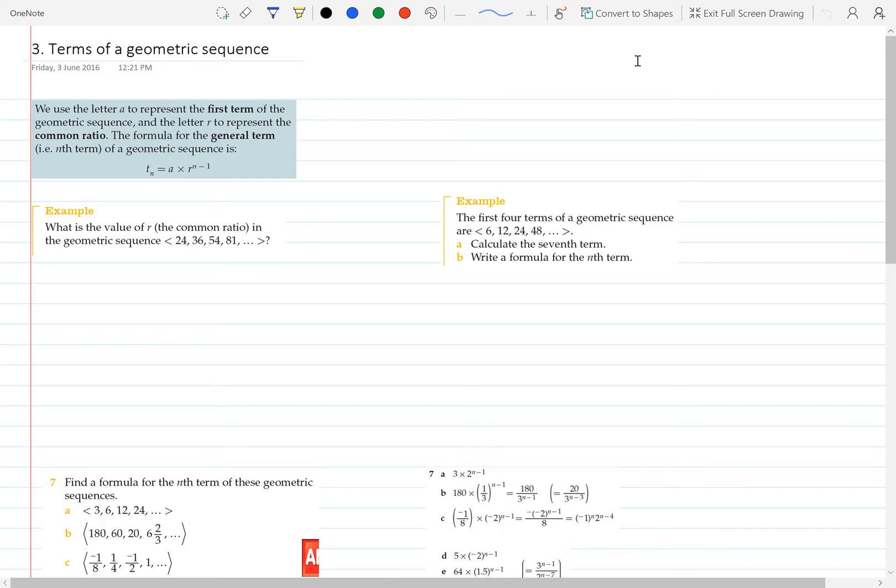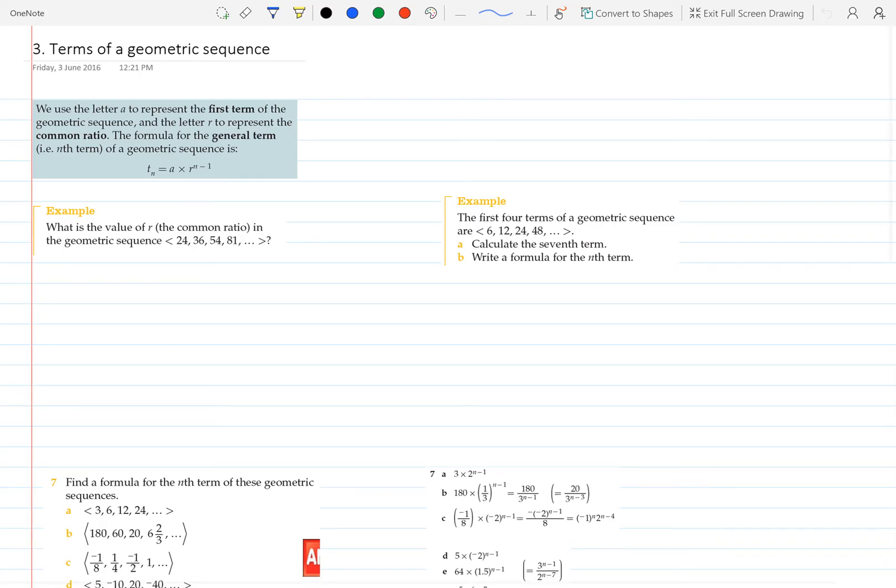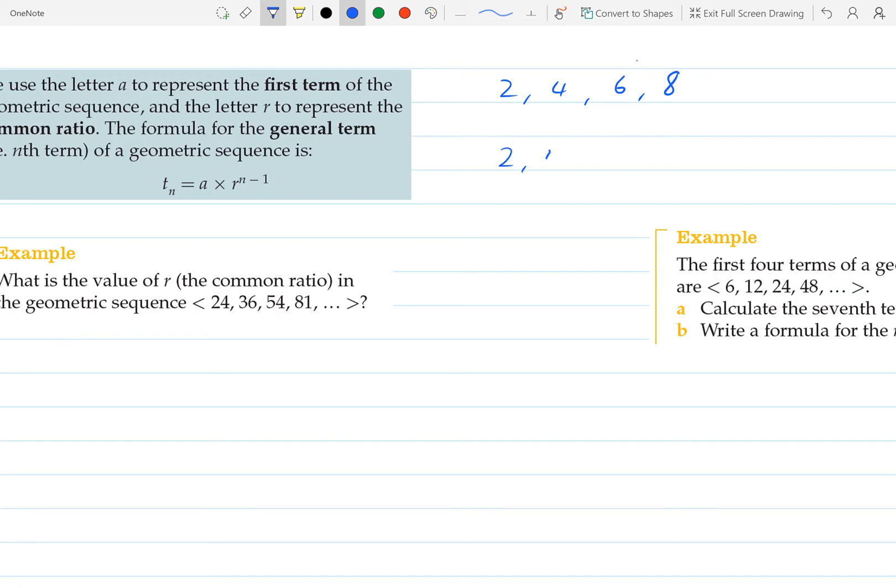Hi everyone, here we're looking at terms of a geometric sequence. So the difference between an arithmetic sequence and a geometric sequence is while an arithmetic sequence goes up by the same amount each time,